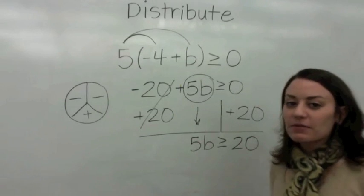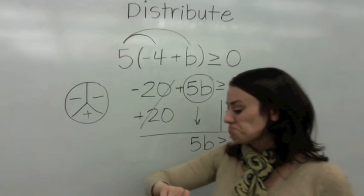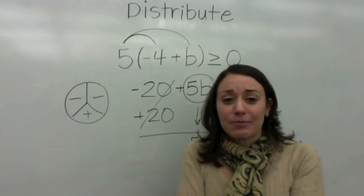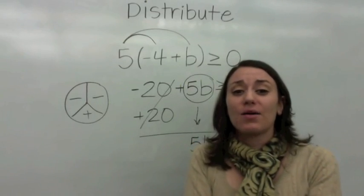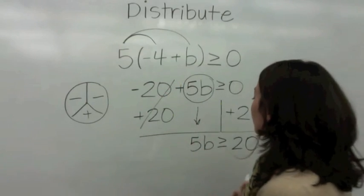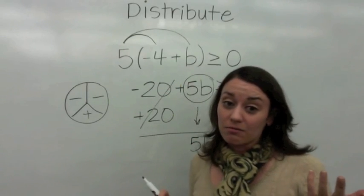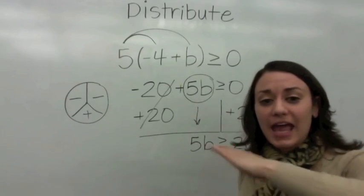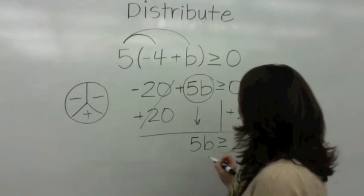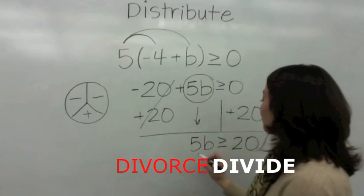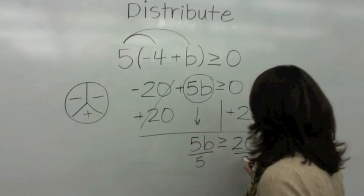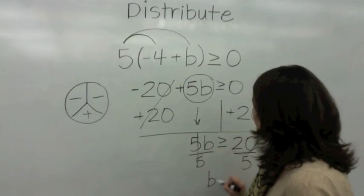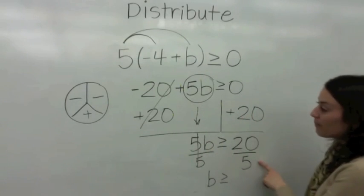So Mr. 5 and Ms. B have been married now for about 30 seconds. She says, you know what? I just can't take this anymore. I want to be alone. I want to be a single lady. So because she does not want to be with Mr. 5, because she found out that he was with Ms. negative 4, they want to get a divorce. When you divorce, you divide. You divide both sides by 5 so that Ms. B can be alone. 5 divided by 5 is 1.